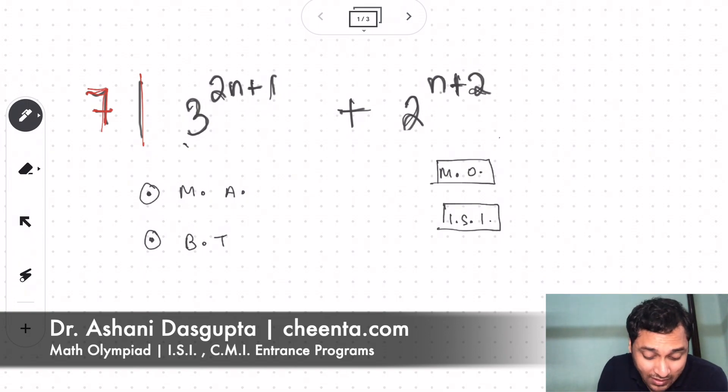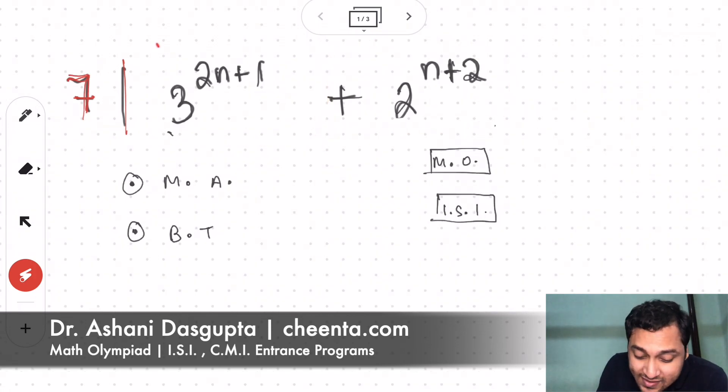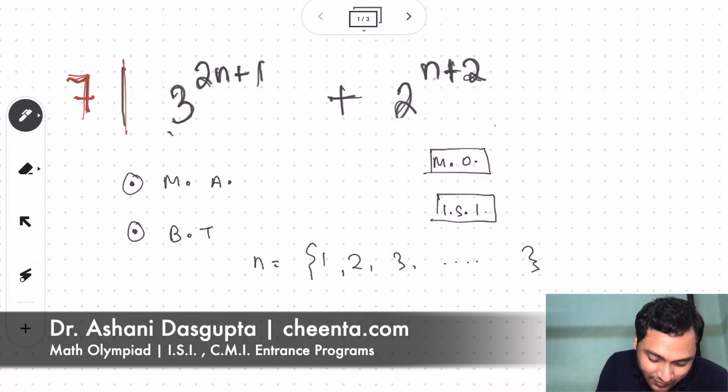So what is the problem? The problem is this: we want to show 7 always divides 3 to the power 2n plus 1 plus 2 to the power n plus 2. So this expression, 3^(2n+1) + 2^(n+2), is always divisible by 7. We want to show this for all positive integers 1, 2, 3, 4, whatever n equals.